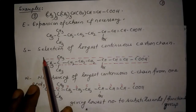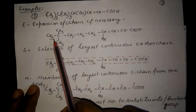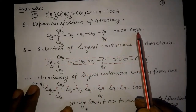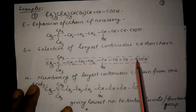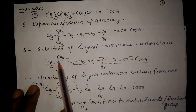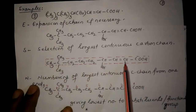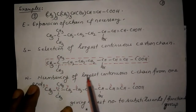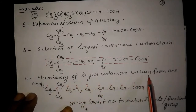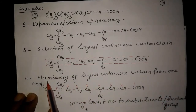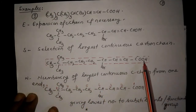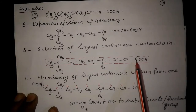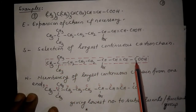Next, S: selection of the longest continuous carbon chain. You have to find out the longest continuous carbon chain. The longest continuous carbon chain is written in a red colored box. You have to select the longest carbon chain: 1, 2, 3, 4, 5, 6, 7, 8, 9. Then N: numbering of the longest continuous carbon chain from one end.